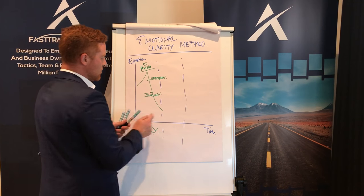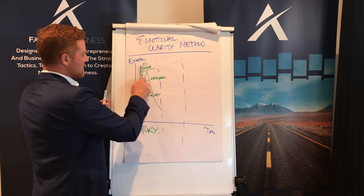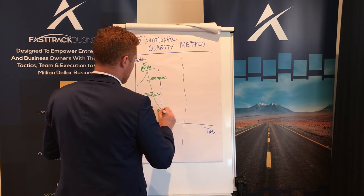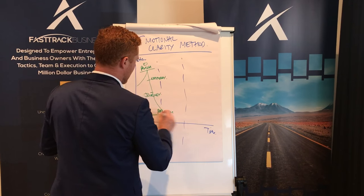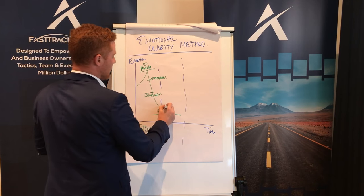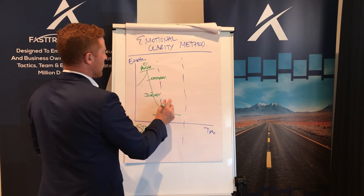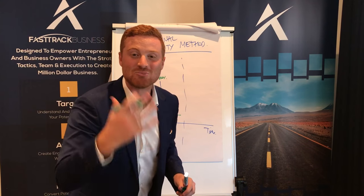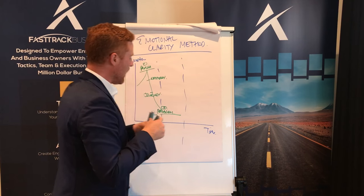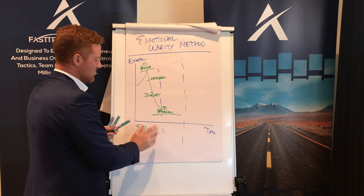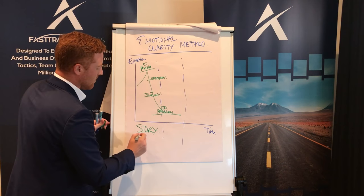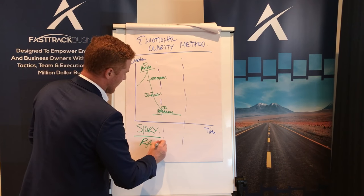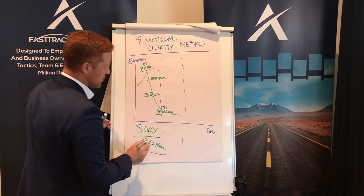Then you get to the second piece of clarity: problem clarity. So you've got person clarity, now problem clarity — two of the four that you must have. The interesting thing about telling your story is it's right brain — it's the emotional brain.